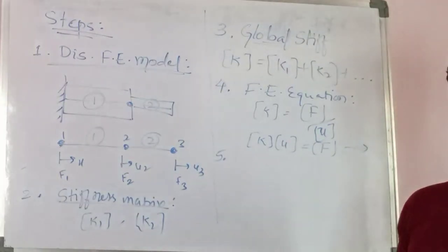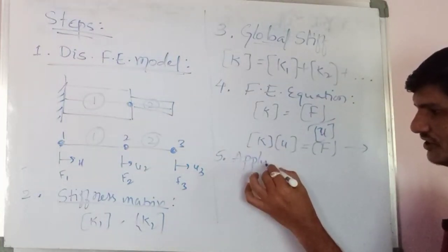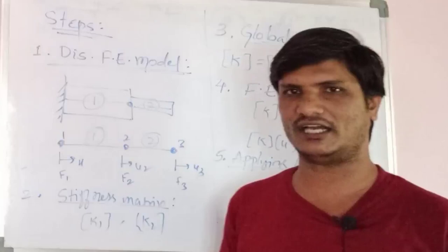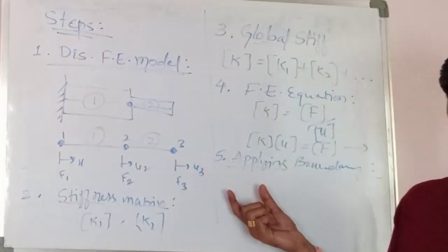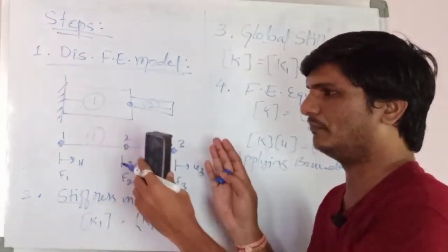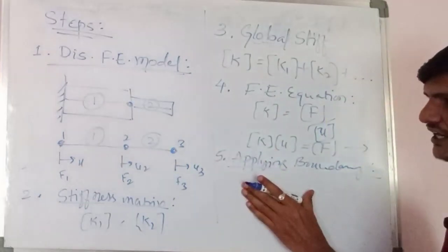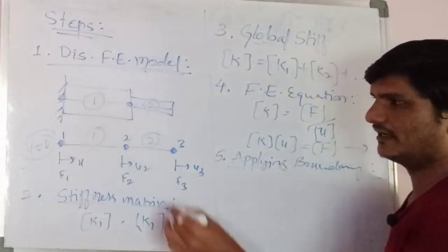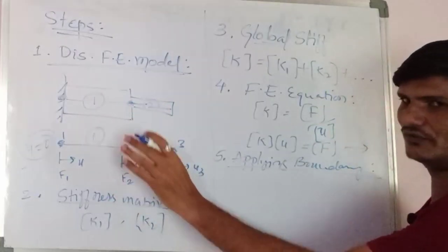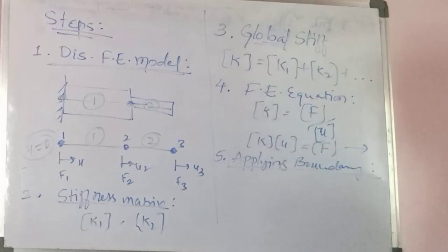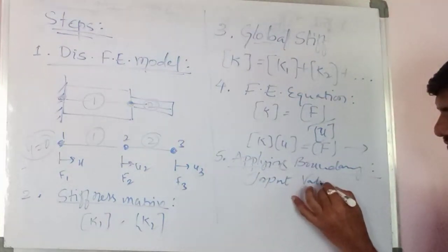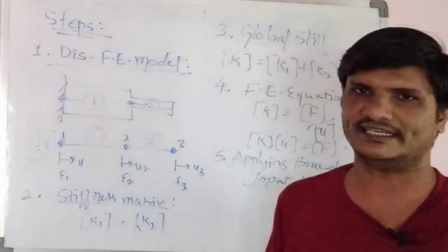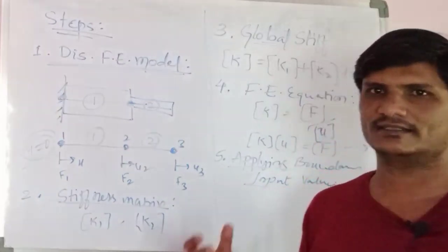The fifth step is applying the boundary conditions. For example, for a given problem the boundary condition may be U1 = 0, and if a load is applied at another node, F2 equals some value. Boundary conditions are the input values substituted into the problem — whether temperature-related, thermal, static, or dynamic loads.